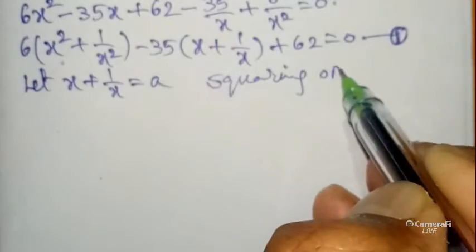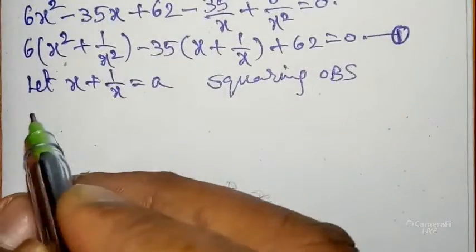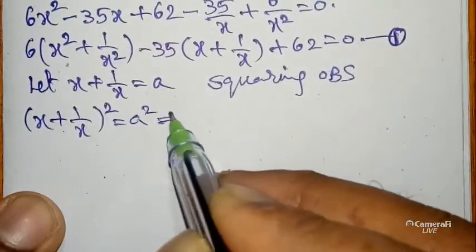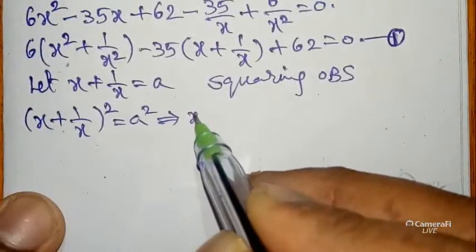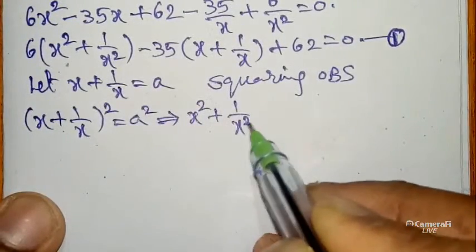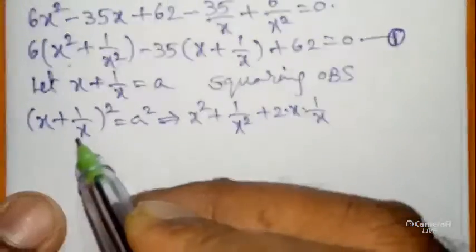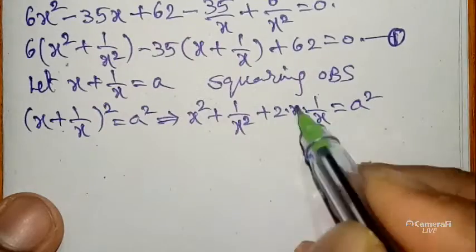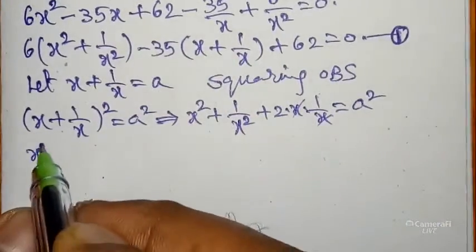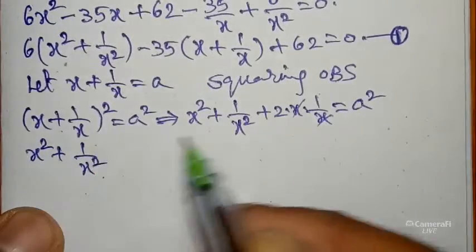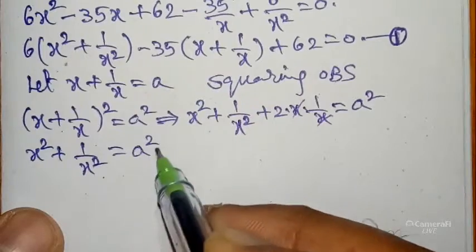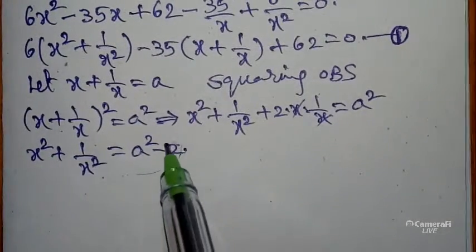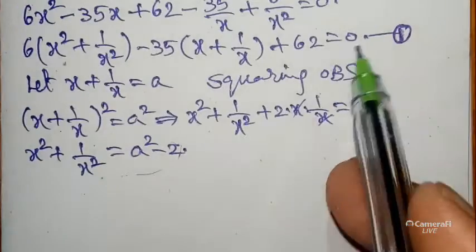Now let x + 1/x = a. Squaring both sides: (x + 1/x)² = a². This expands as x² + 1/x² + 2·x·(1/x) = a², which simplifies to x² + 1/x² + 2 = a². Therefore x² + 1/x² = a² minus 2. Substituting into equation 1: 6(a² − 2) minus 35(a) plus 62 equals 0.